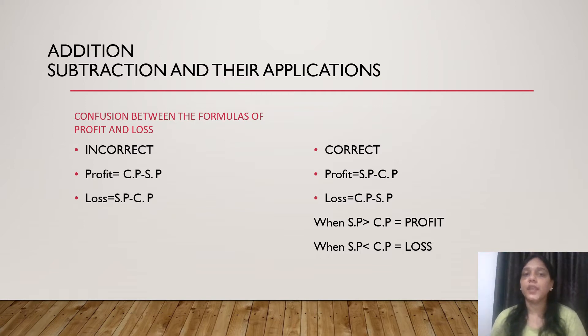In addition and subtraction chapter we have many questions of profit and loss. So students get confused between the formulas of selling price and cost price. They apply the wrong formula. To solve these type of questions they need to learn the formulas properly. As we know that when selling price is greater than CP then it will go to profit. And when SP is less than CP then it will go to loss. The formula of profit will be SP minus CP and the formula of loss will be CP minus SP.